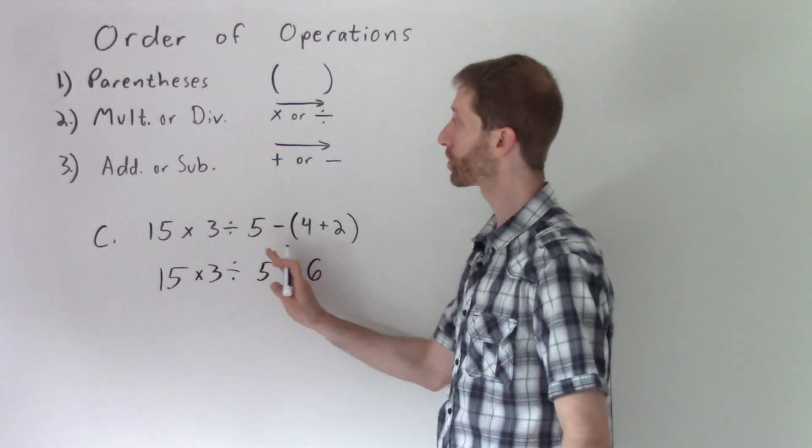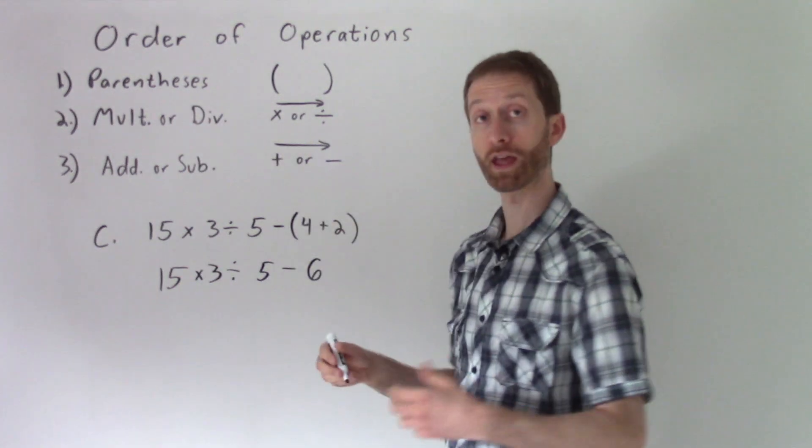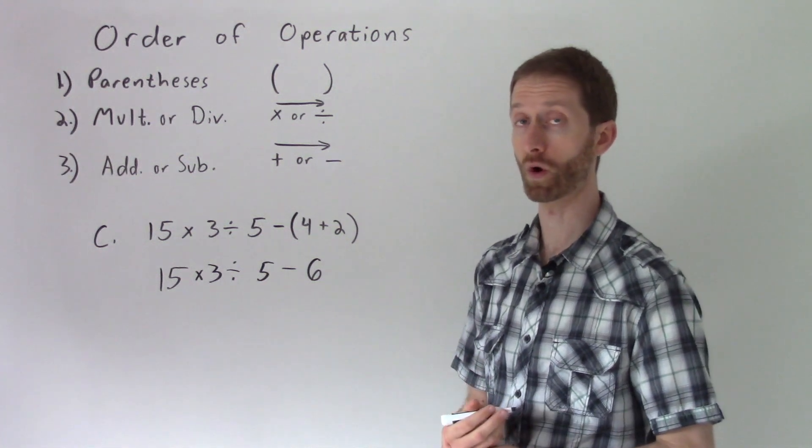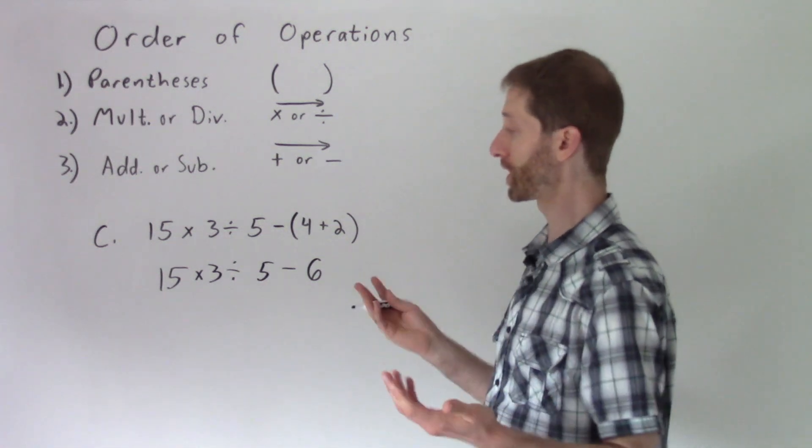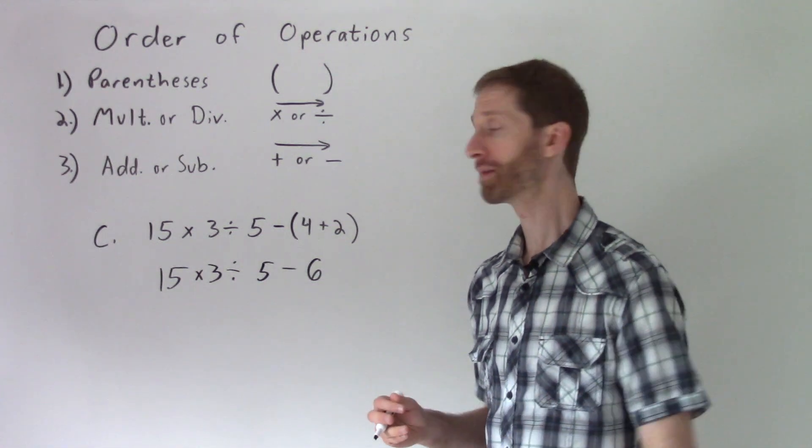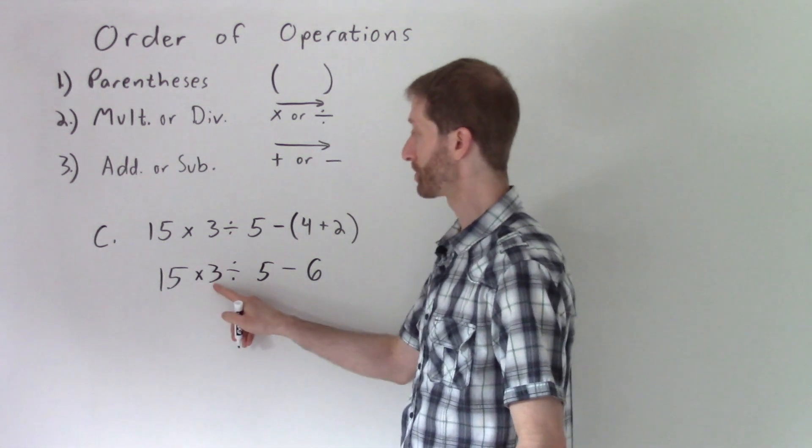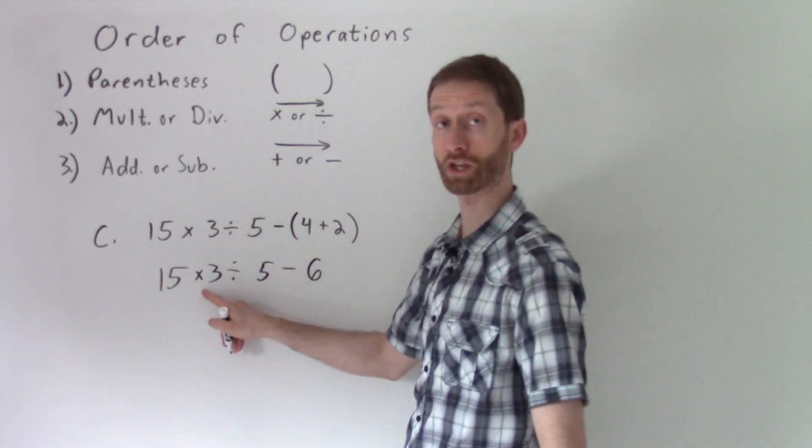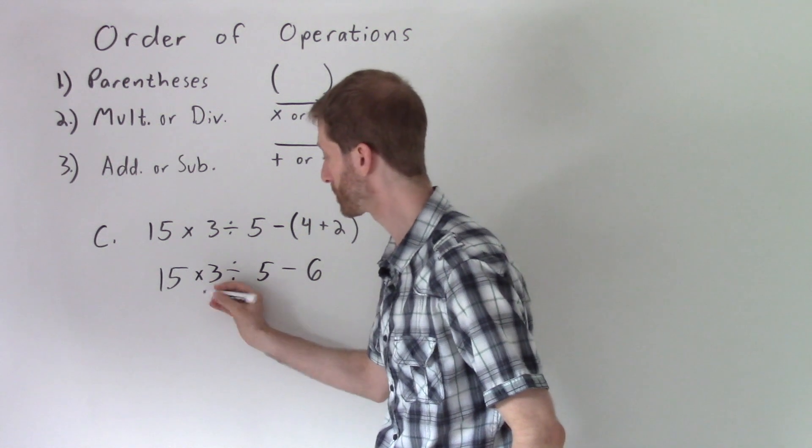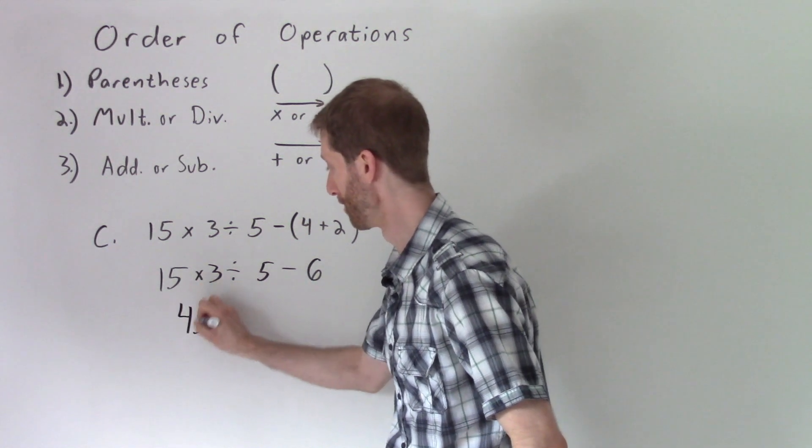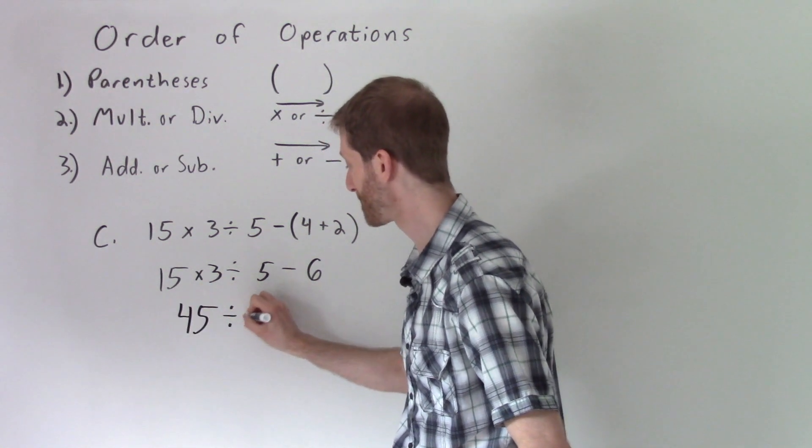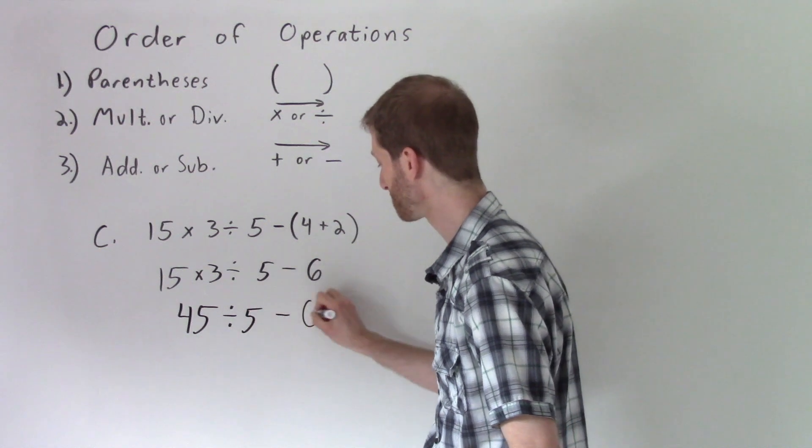Now we work left to right with multiplication or division, seeing that there's no more parentheses or exponents, which again, you won't see until later on in math. 15 times 3 going left to right, multiplication happens first. 15 times 3 is 45.